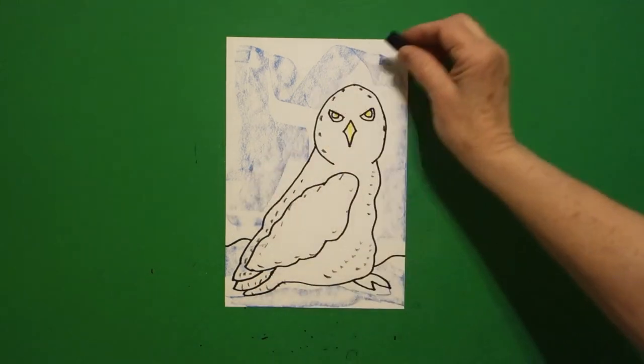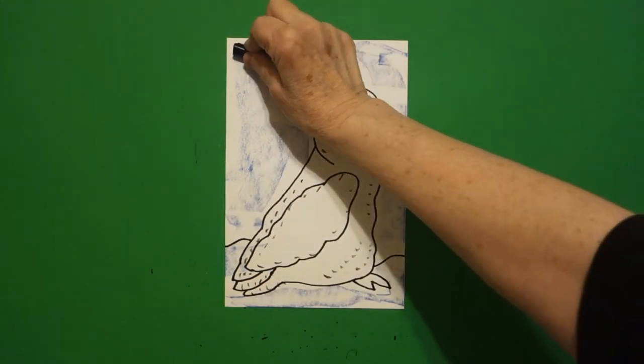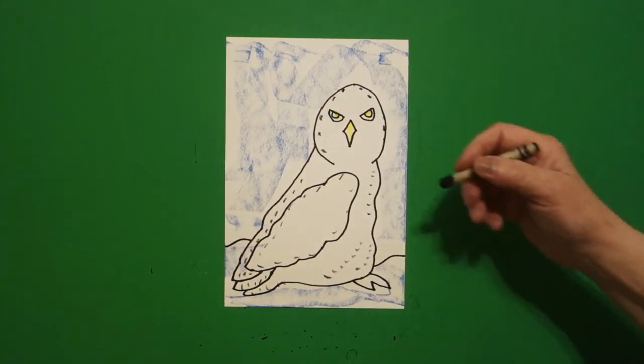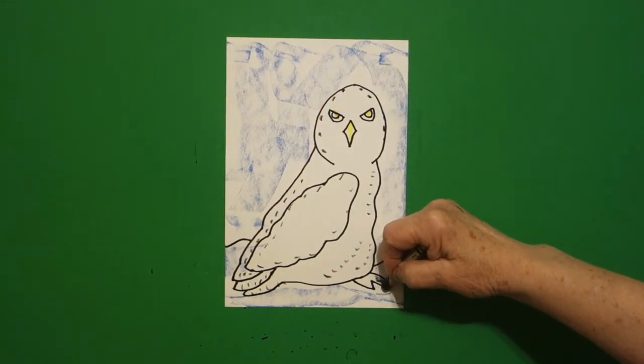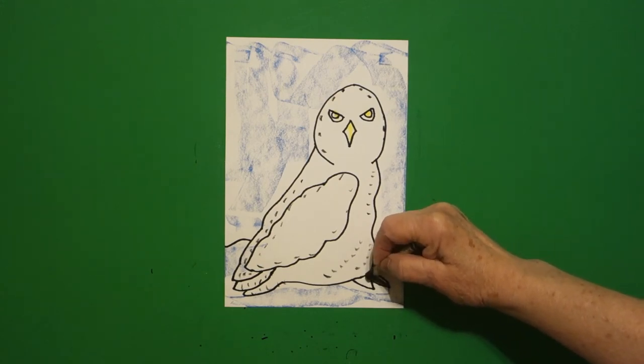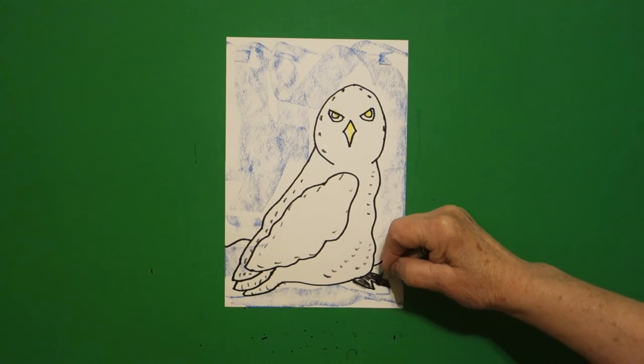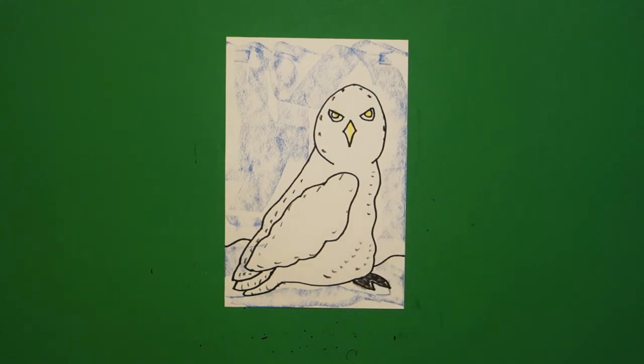He's sitting in the snow. But it's like, how do you draw snow? Take a big, fat blue crayon and color it in that way. And this is his claw. This is one of his claws. So take your black crayon and color that in. Okay, let's see what Mr. Snowy Owl looks like all colored in.